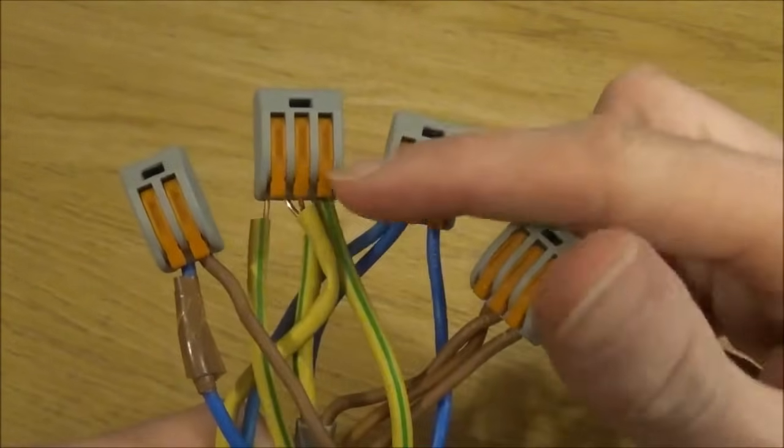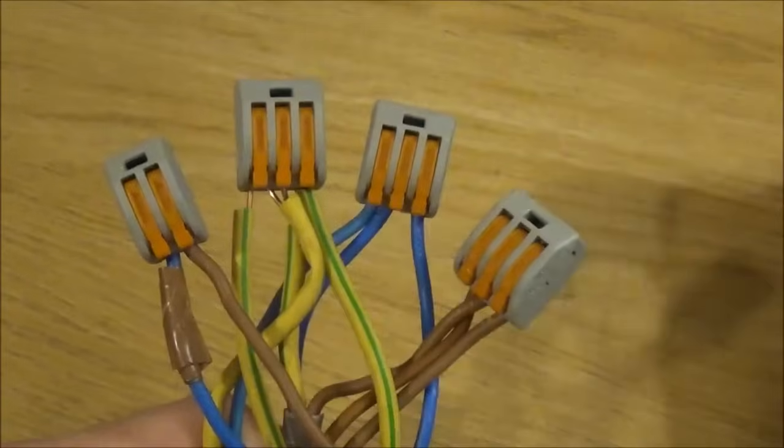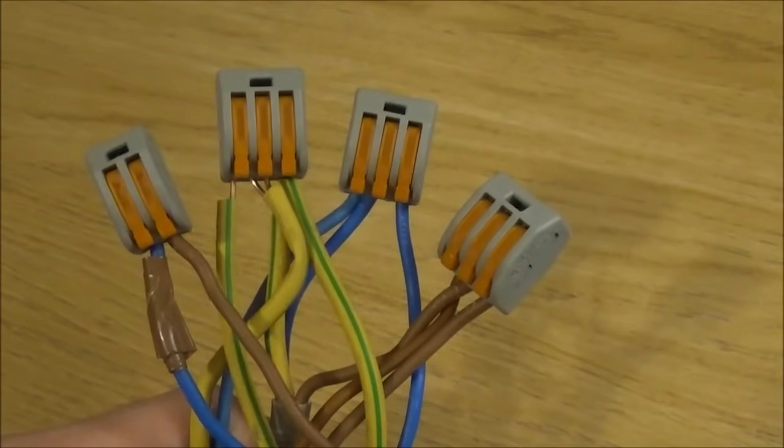These connector blocks can then sit inside your light fitting if it's deep enough, or if they need to be housed in an enclosure in the ceiling we can use the Wago box junction box.